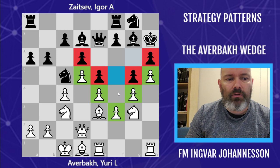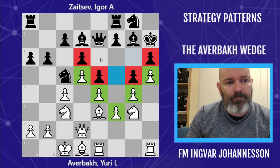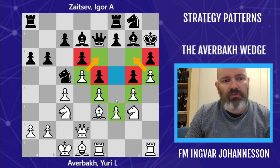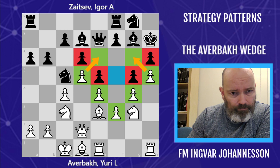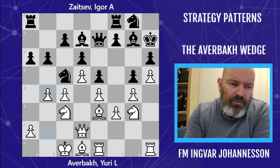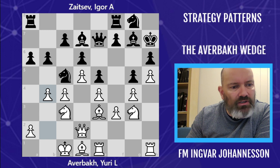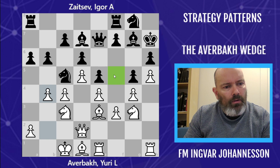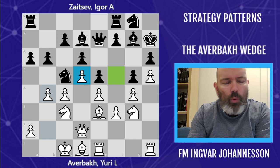We also have the f5 square available. Note that f5 is not available to a Black knight because the squares approaching it are taken by the White pawns — so Black is not going to establish a knight on f4. This is very important. The basis of this pattern is that once you establish the Averbach Wedge, you have a nice space advantage on the kingside with the f5 square, and usually because of the d5 pawn, a space advantage on the queenside as well.